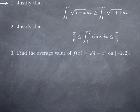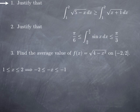Let's turn to some applications. First exercise: justify that the integral from 1 to 2 of the square root of (5 minus x) is greater or equal to the integral from 1 to 2 of the square root of (x plus 1). So, if x is between 1 and 2 — the situation we are in for these integrals — I'm going to try to see what I can say about the function √(5 minus x) on one end, and about √(x plus 1) on the other. For 5 minus x, I'll look at minus x first: this is between −2 and −1, so 5 minus x is between 3 and 4.